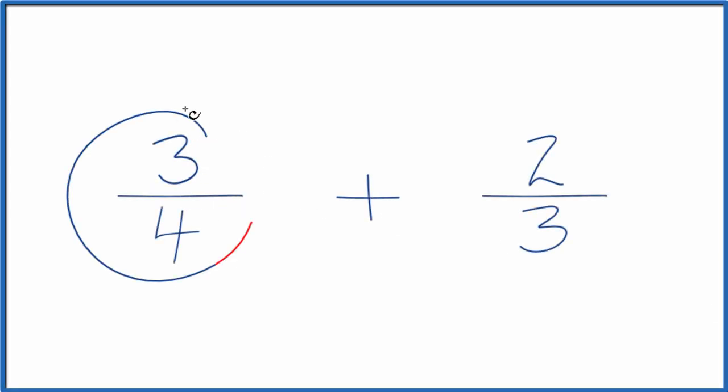Let's simplify the fraction 3 fourths plus 2 thirds. Here's how we do that. We need to get the denominator for both of these fractions to be the same.